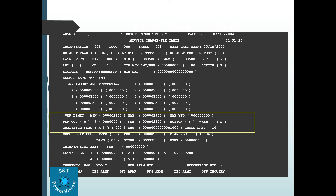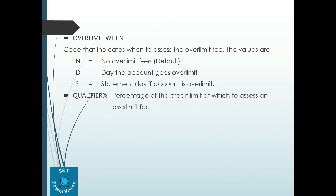Another important parameter is the over limit fee. Suppose our credit limit is one lakh and we have spent more than one lakh — whether to assess an over limit fee or not is decided by this parameter, including up to what percentage the customer can spend over the limit. The 'Over Limit When' parameter determines when the fee is calculated: N means no over limit fee, D means the day the account goes over limit — if the account goes over limit on the 25th, the fee is calculated and posted on that day.